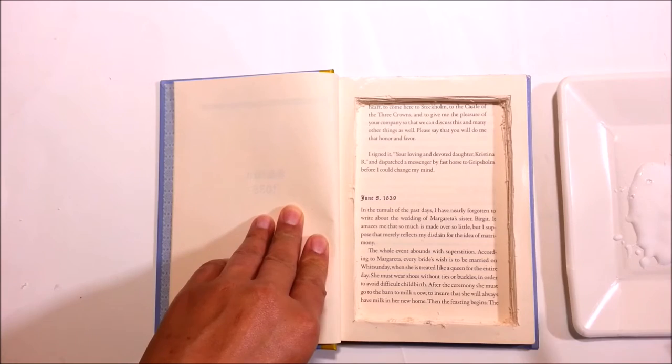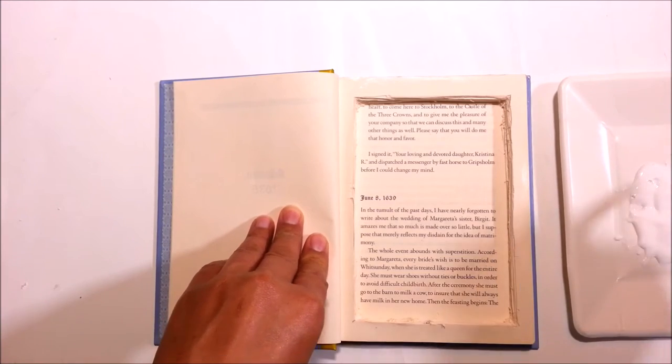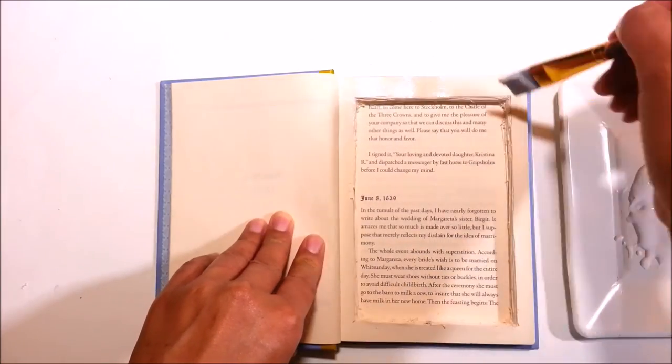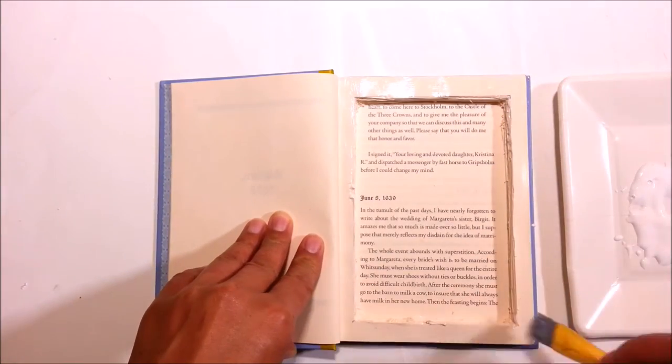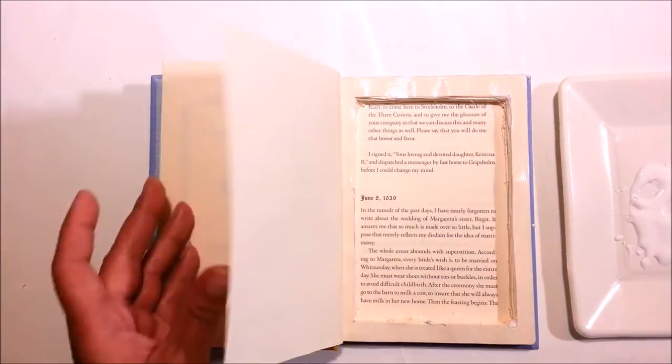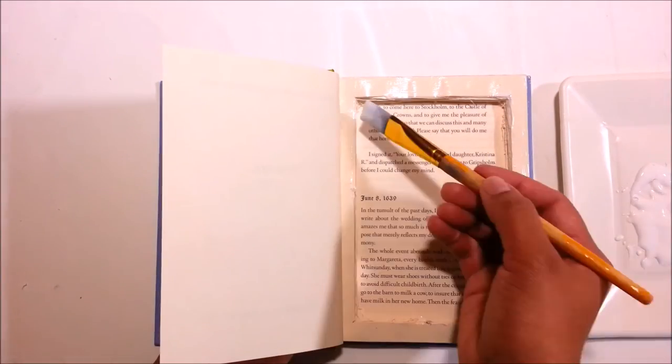Now we're done - the edges don't look very pretty, but don't worry about that, we're gonna fix it right now. Take your Mod Podge, do even but thick coats, and paint the edge. As you can see right now, I'm gonna paint the inside of the book - the edges of the inside as well as the center of the book.